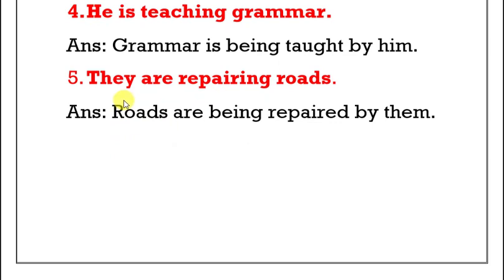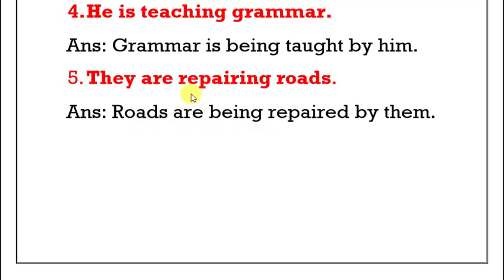Final fifth example: 'They are repairing roads.' Here 'they' is the subject, and 'roads' is the object. Is it plural or singular? It is plural. So the suitable helping verb is 'are.' Roads are being... the V3 form of repairing is repaired. So: 'Roads are being repaired by them.'